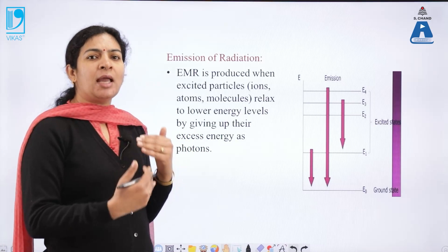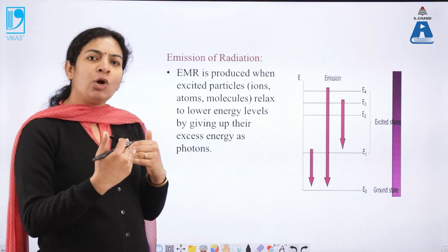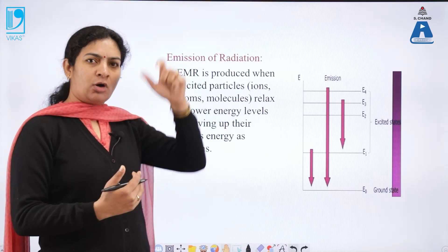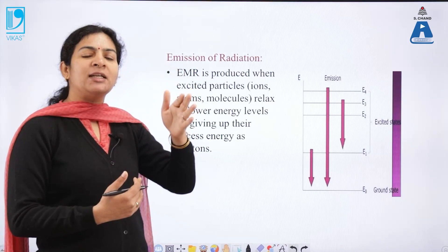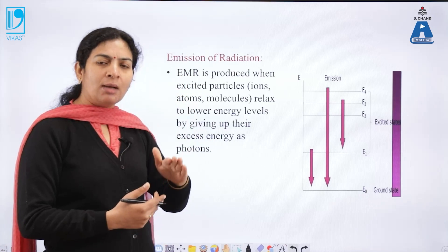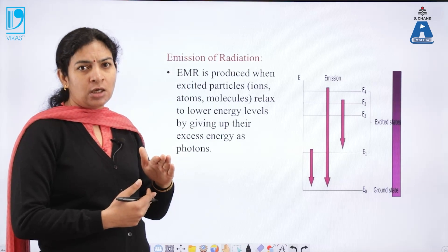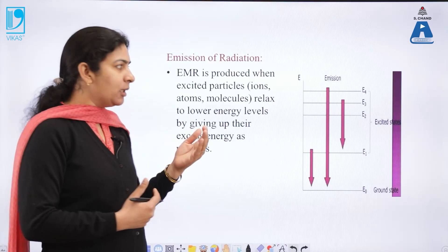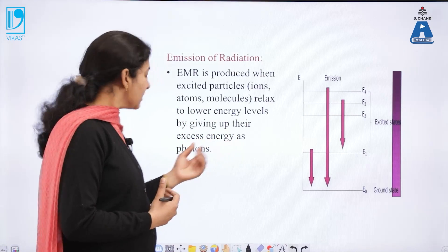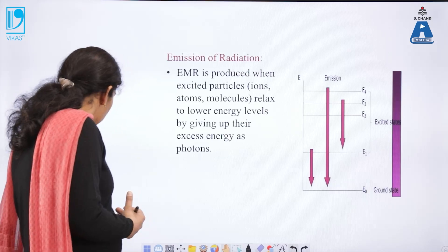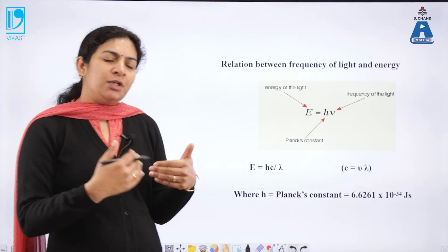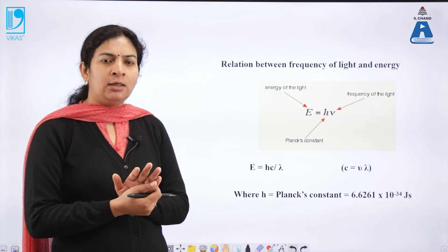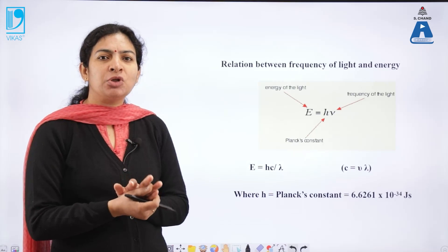So absorption and emission: any molecule which goes to the excited state is recorded as an absorption, but it is definitely going to come back to the ground state in order to acquire the most stable state, and this we call the emission spectra. So we have understood what spectroscopy is and how absorption and emission spectra are obtained.